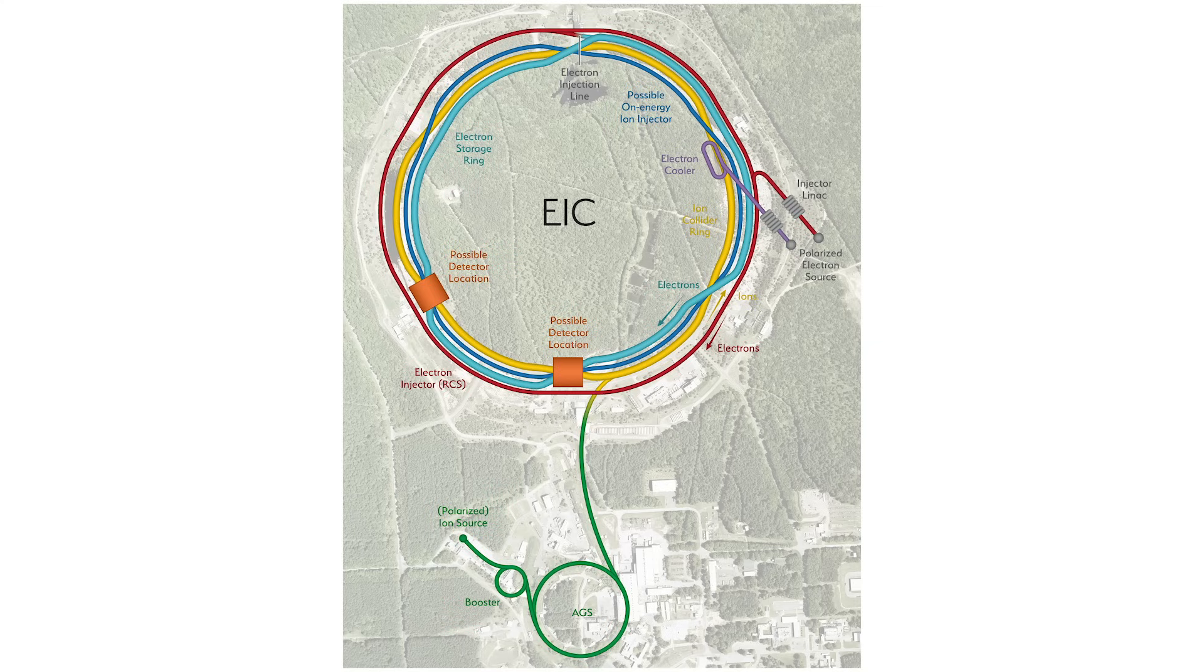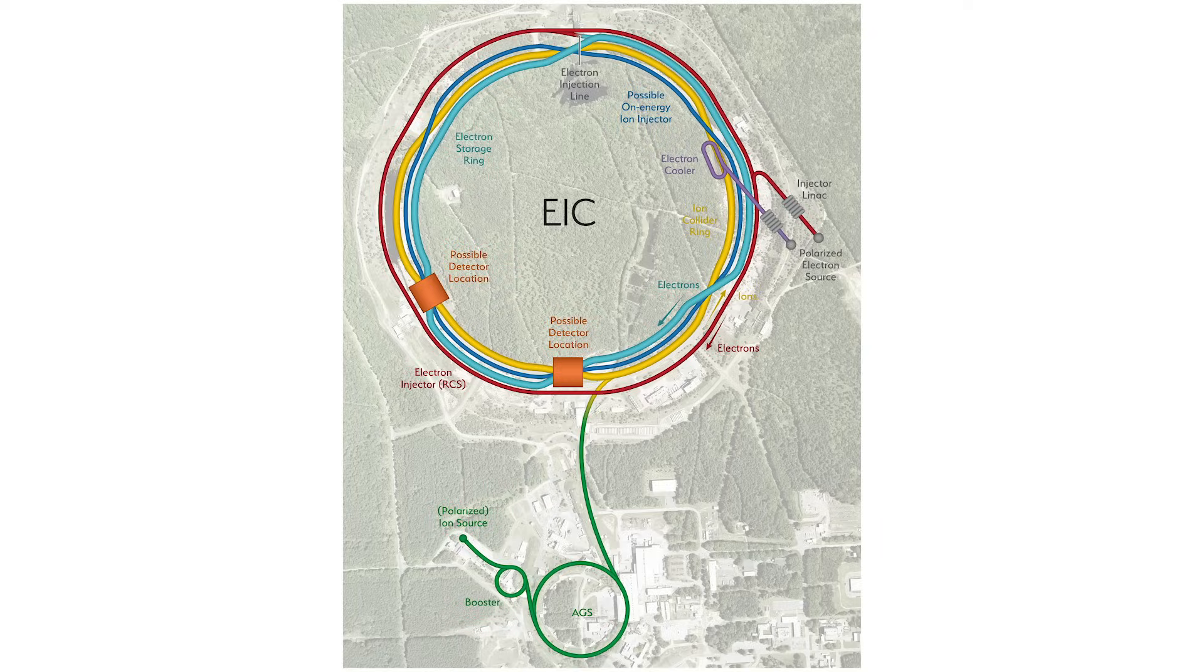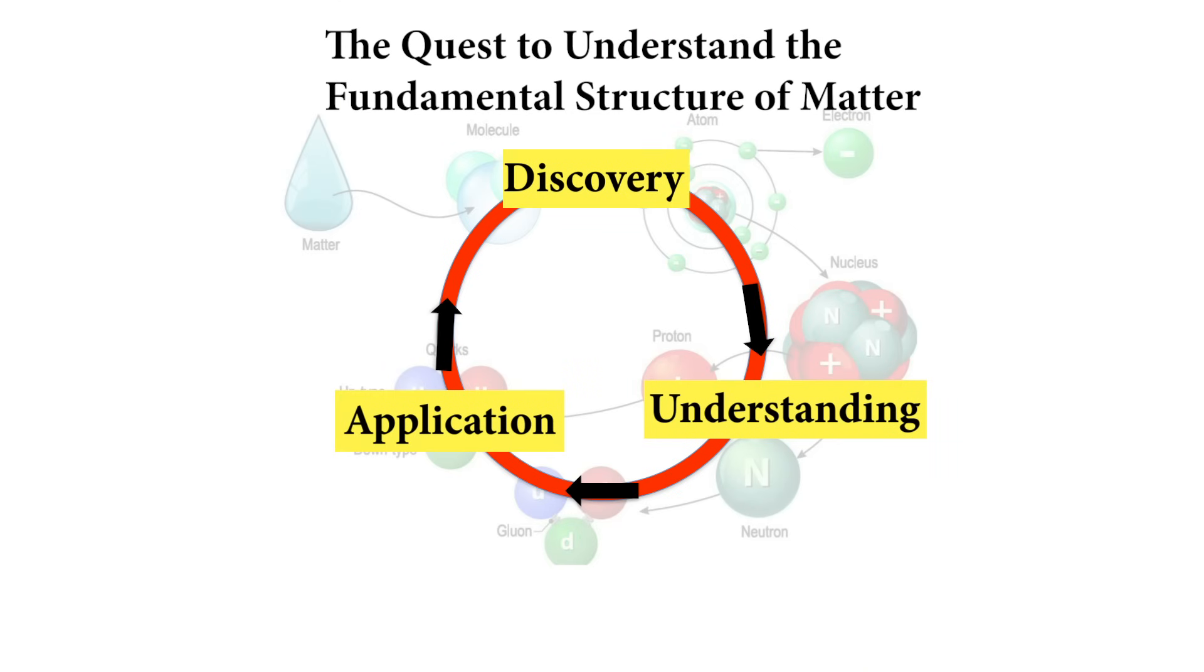EIC will provide precise maps to bridge the regions where a few quarks dominate the structure of protons and nuclei to where gluons dominate. The goal is to provide us with an understanding of the internal structure of the proton and more complex atomic nuclei that is comparable to our knowledge of the electron structure of atoms, which lies at the heart of modern technologies.